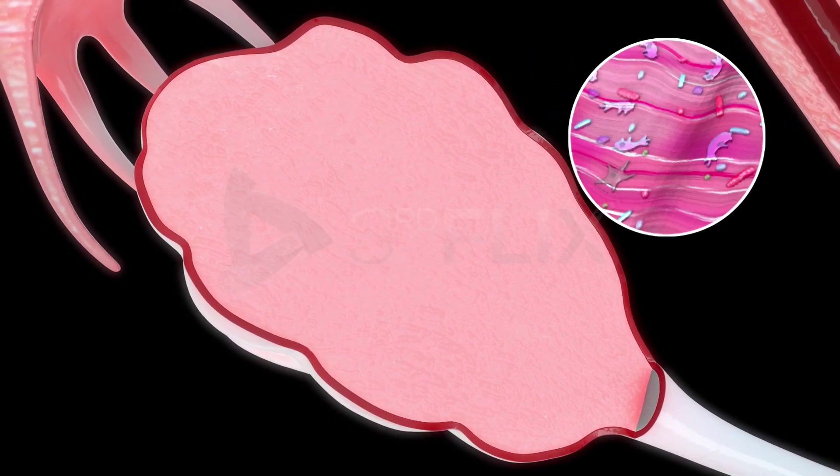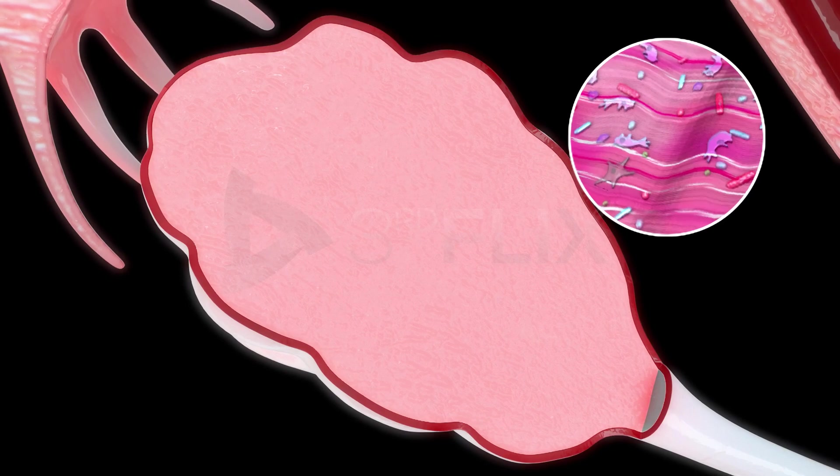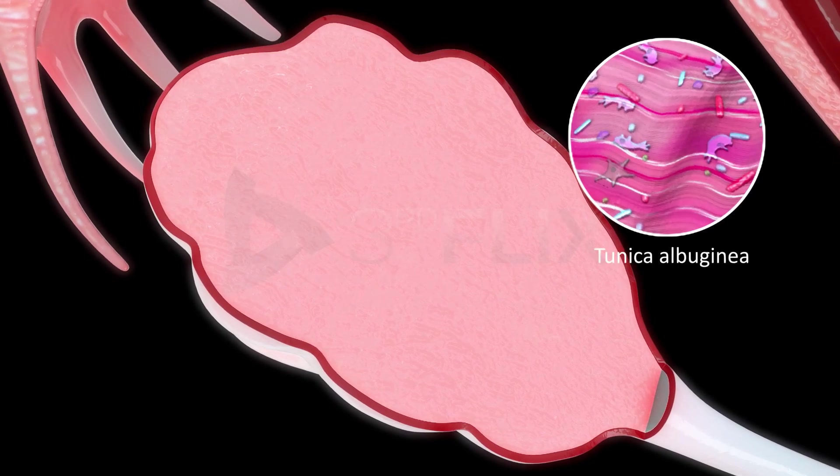Inner to the germinal epithelium, there is a dense connective tissue capsule called tunica albuginea.